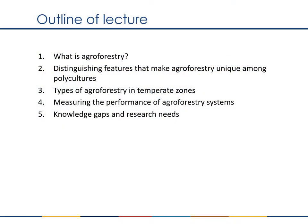This lecture will cover five areas. I will start with the definition and general description of agroforestry, followed by detailed descriptions of distinguishing features of agroforestry systems, especially focusing on how woody perennial species can affect or change a polyculture system. I will then describe examples of different types of agroforestry systems used in temperate regions, with descriptions of ecosystem and socioeconomic benefits of each. Next, I will demonstrate some analyses one can use to understand how well an agroforestry system is performing. Finally, I will touch briefly on current knowledge gaps and research needs.